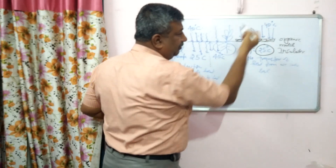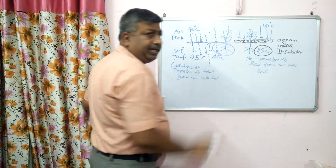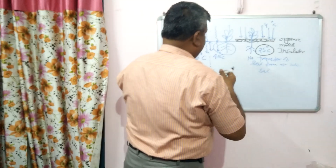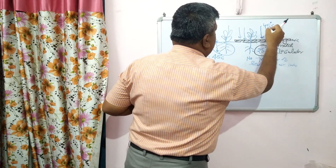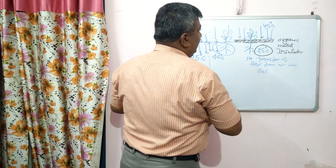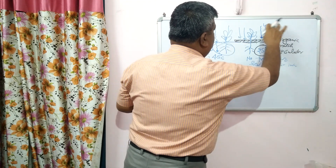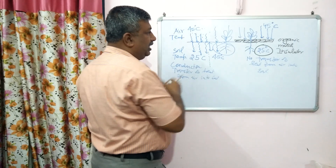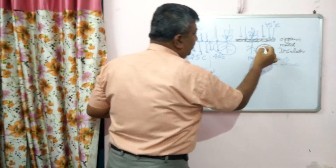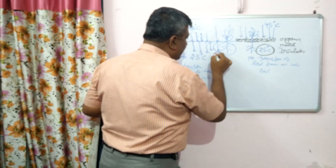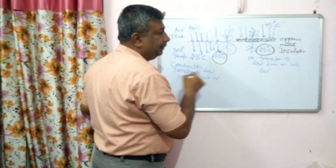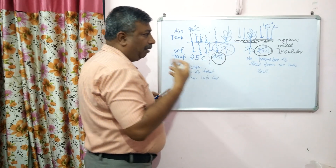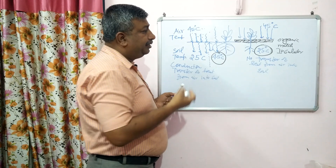Suppose air temperature is 40 degrees centigrade and soil temperature is initially 25 degrees centigrade. The heat strikes on the mulch, but because the mulch acts as an insulator, there is no transmission — no conduction, no transfer of heat from air into soil. So the soil temperature remains almost 25 degrees centigrade even when air temperature rises to 40 or 45 degrees centigrade.